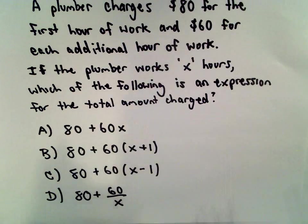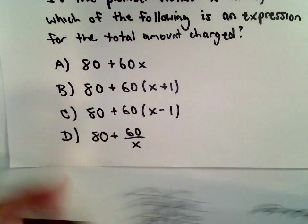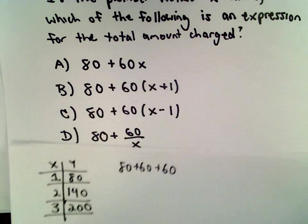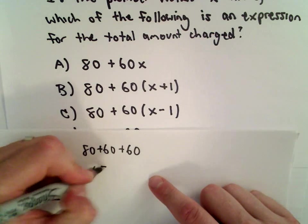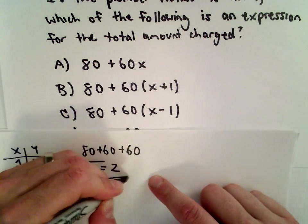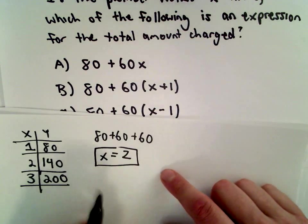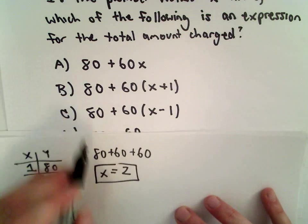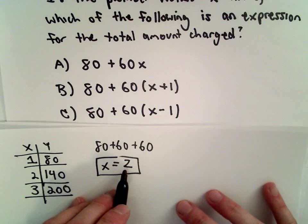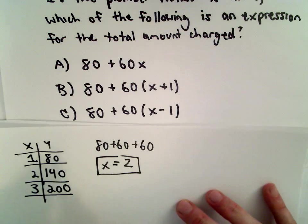So, since we have these four answer choices here, I'm just going to see which one of these gives me the correct answer. I'm going to let x equal 2. Again, we said if the plumber works two hours, he's going to be charging $140. Let's see which one of these four formulas, when we substitute in x equals 2, gives us the value of 140.